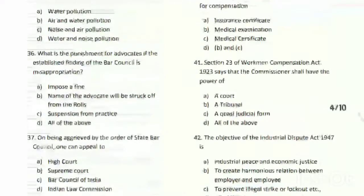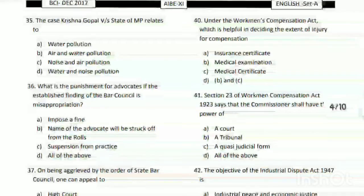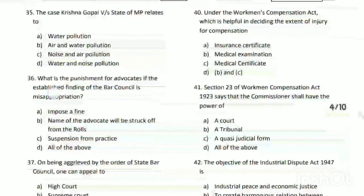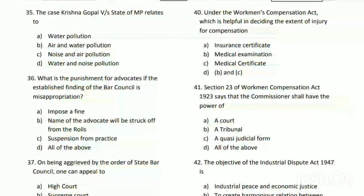Question number forty: under the Workmen's Compensation Act, which is helpful in deciding the extent of injury for compensation? The answer is D - A, B, and C all, meaning medical examination and medical certification.